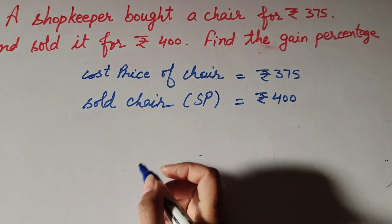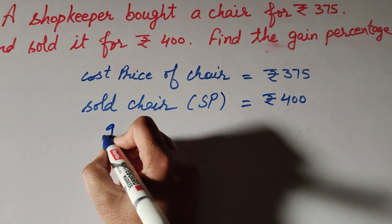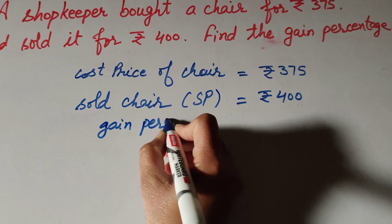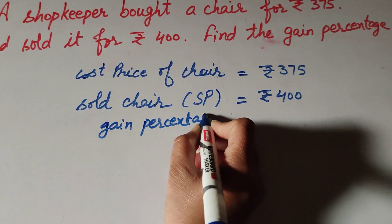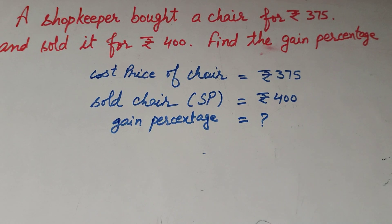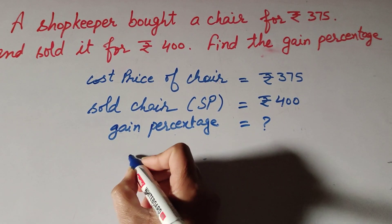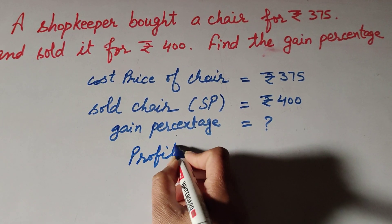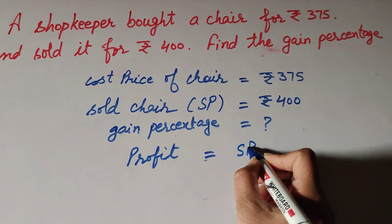Since SP is greater than CP, we find gain percentage. Gain percentage is also called profit percentage. The formula is: profit equals SP minus CP.